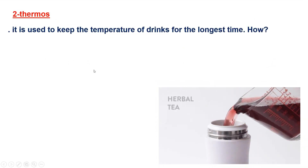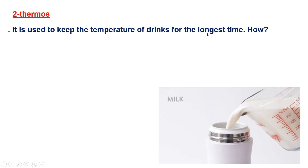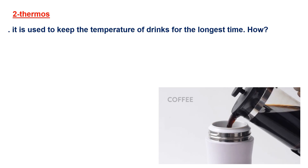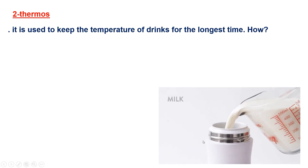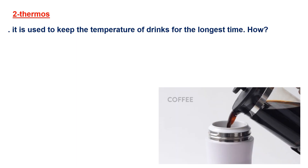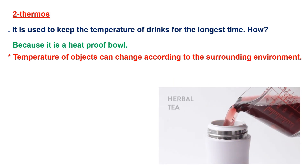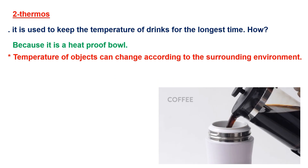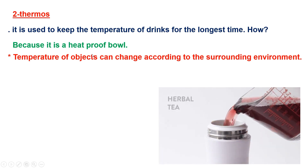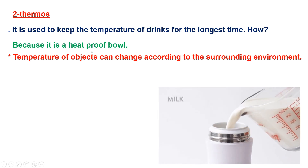A thermos - what is it? A thermos keeps the temperature of drinks for the longest time. It preserves the temperature of whatever you put inside it for a long time - whether it's hot or cold. How? Is it made of a conductor or an insulator? It must contain an insulating material that prevents the heat of the contents from transferring outside, or outside heat from entering. That's why it's heat-proof - like water-proof means water resistant, heat-proof means heat resistant. It doesn't allow heat to pass through.